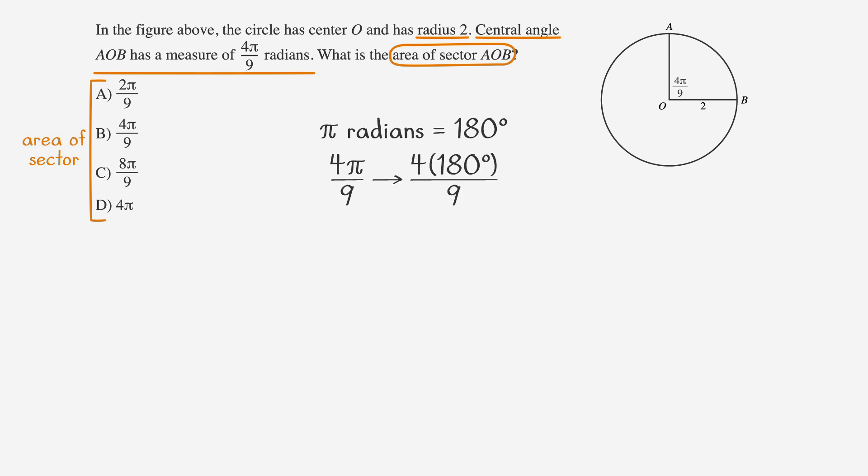We get 4 times 180 degrees over 9. Divide 180 by 9, and we get 4 times 20 degrees, or 80 degrees. So we know 4 pi over 9 radians equals 80 degrees. Let's fill that into the picture.